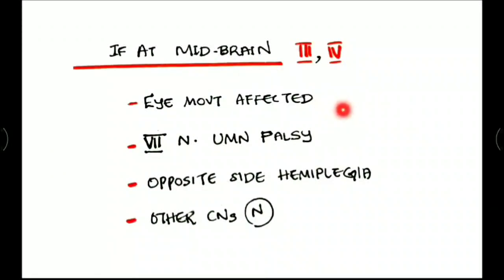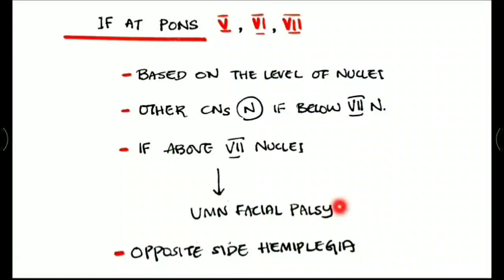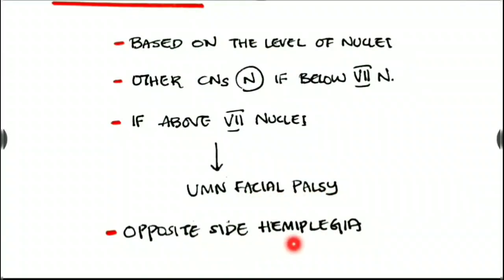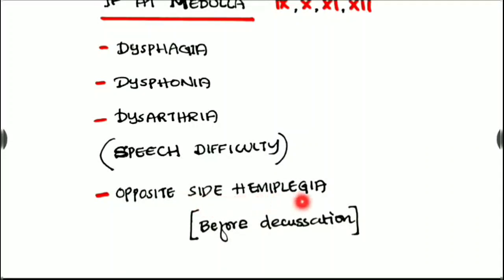In the midbrain, the cranial nerves are involved in eye movement, so any lesion causes loss of eye movement along with seventh nerve palsy and opposite side hemiplegia, with other cranial nerves being normal. A lesion in the pons affects the fifth, sixth, and seventh nuclei. Based on the level of the lesion, the clinical features differ. If the lesion is above the seventh nuclei, there is UMN facial palsy with opposite side hemiplegia. If the lesion is at the medulla, all four nerves are affected — supplying muscles of the pharynx and larynx — causing dysphagia, dysphonia, dysarthria, and opposite side hemiplegia.